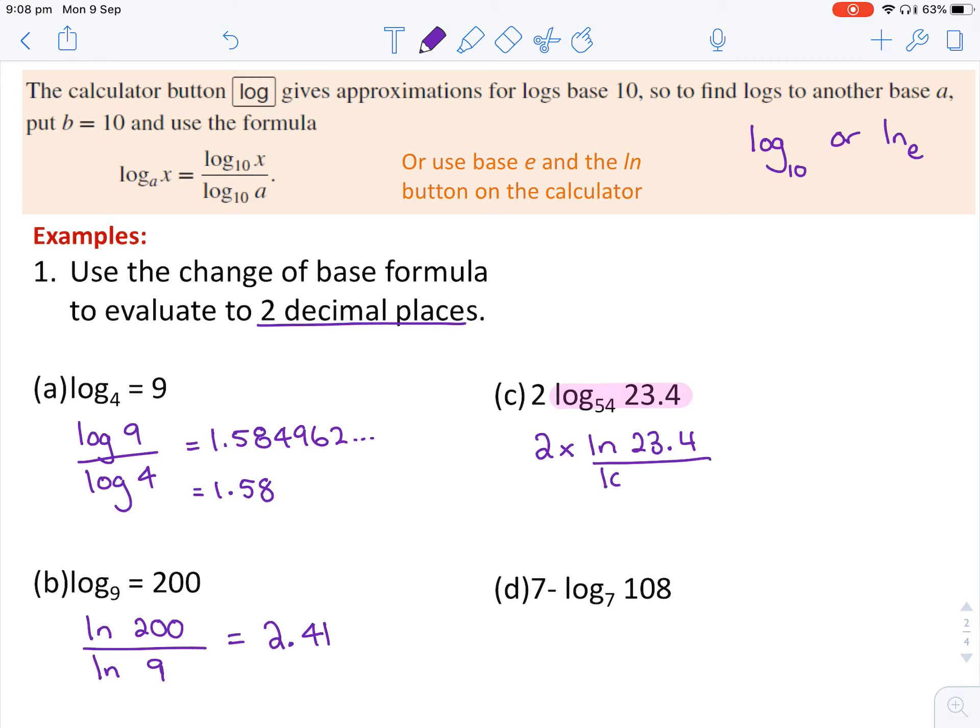And as long as you type it exactly like this in the calculator, there should be no issues. And that should round to 1.58 correctly to two decimal places.